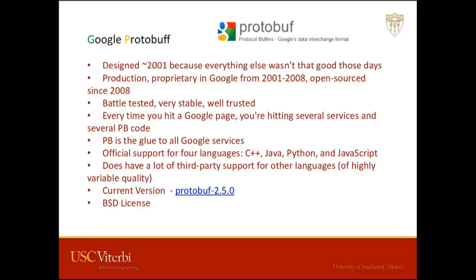The first one is Google's Protocol Buffers, or Protobuf for short. It was designed in 2001 because there wasn't really a good option at the time — CORBA and SOAP were around back then. Google kept this and used it all over production continuously since 2001, and in 2008 they open-sourced it. It's battle-tested, very stable, and well-trusted. Every time you use any of Google's services, you're using Protobuf whether you know it or not — their servers are communicating with each other using this exact protocol.